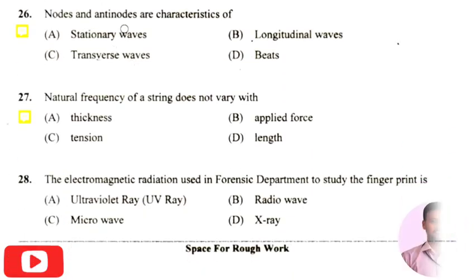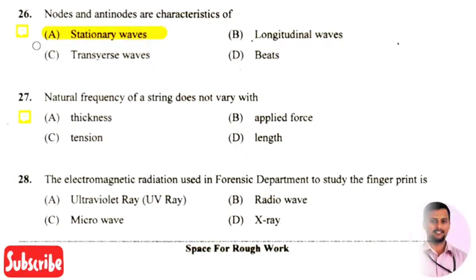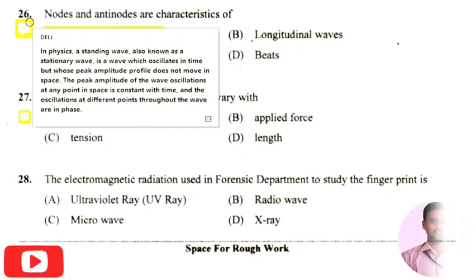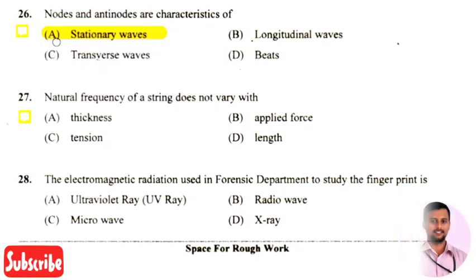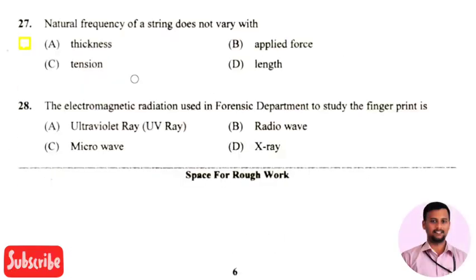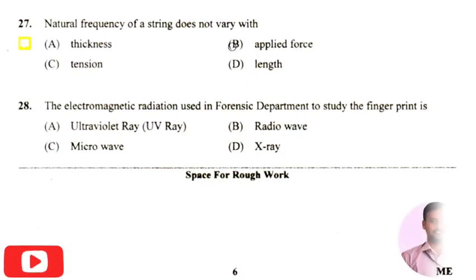The next question is: nodes and antinodes are characteristics of — the right answer is option one, that is stationary waves. A stationary wave is a wave which oscillates in time but whose peak amplitude profile does not move in space. It is also known as a standing wave.